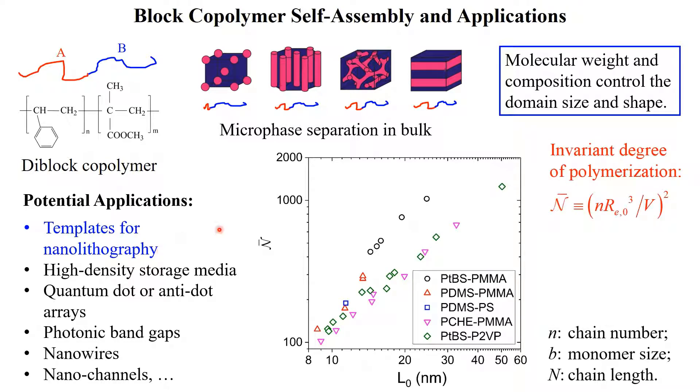For nearly symmetric diblock copolymers forming lamellae in experiments, this plot shows how the invariant degree of polymerization, n-bar, controlling the system fluctuations, varies with the bulk lamellar period L0.